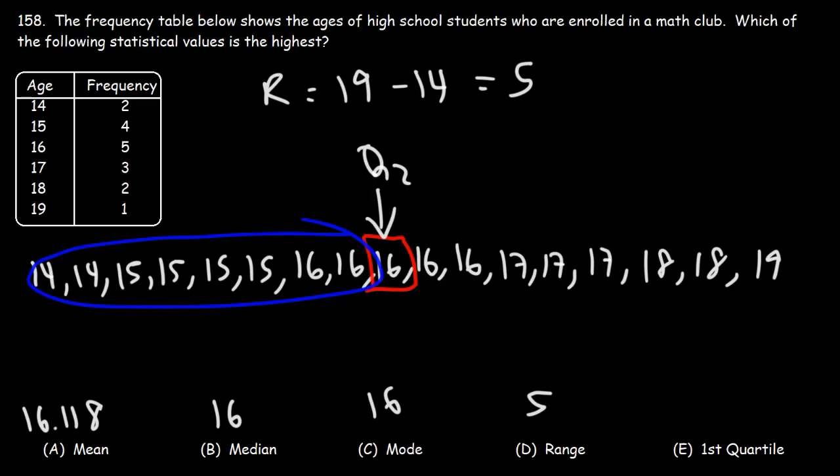So what is the median of those first eight numbers? The median is going to be 15. So 15 is the value of the first quartile.